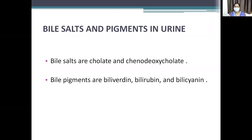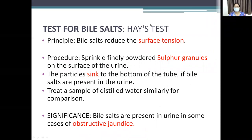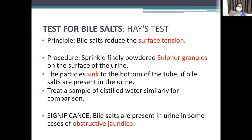Coming to bile salts and pigments in urine: the bile salts are the folate and chenodeoxycholate. The test done is Hay's sulfur test. The principle is that bile salts reduce surface tension. Procedure: take urine, sprinkle sulfur granules on it — if bile is present, the particles sink to the bottom. Use distilled water as a control. If the sulfur powder sinks in urine, it is a positive test.